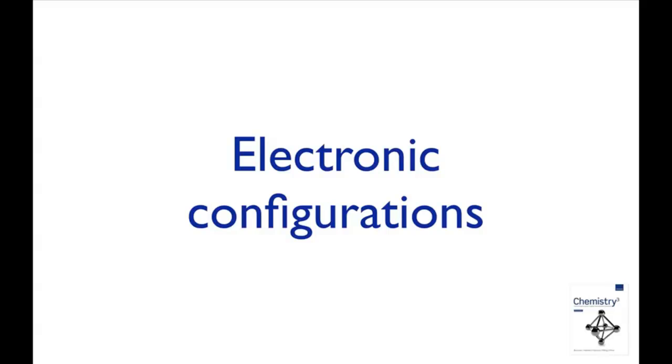In this screencast we're going to work out the electronic configurations of the 3d block ions: iron 3+, nickel 2+, and cobalt 1+.